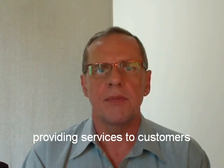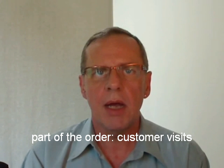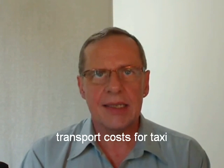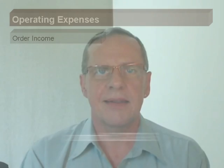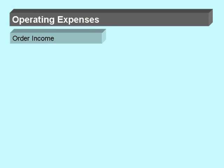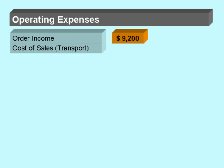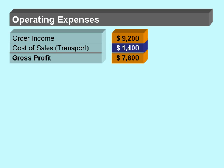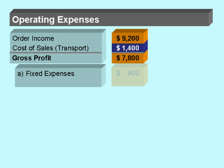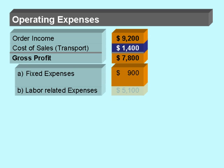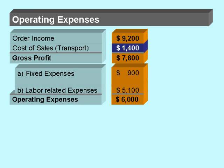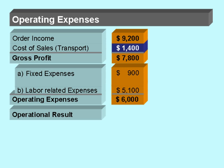Let me give you an example. We have a company providing services to customers. As part of the orders we have to visit our customers — we use a taxi for transport and the taxi costs are part of our cost of sales. We assume an order income of $9,200 and transport costs of $1,400. So the gross profit will be $7,800, with fixed expenses of $900 and labor related expenses of $5,100. Our operating expenses will sum up to $6,000, so the operational result will be $1,800.